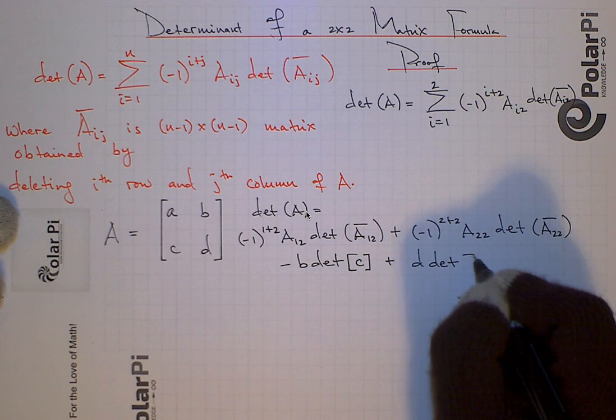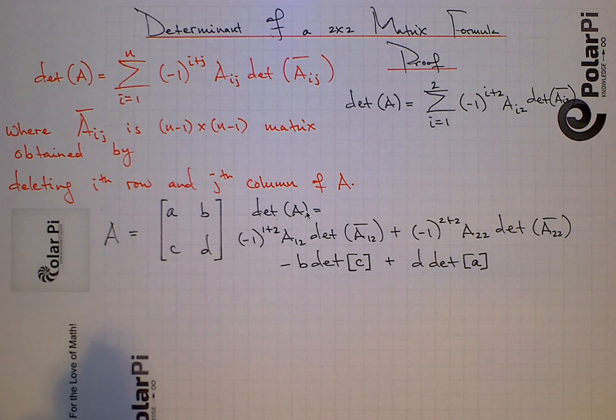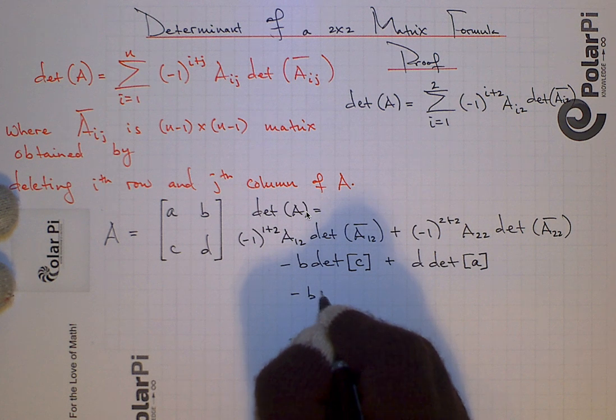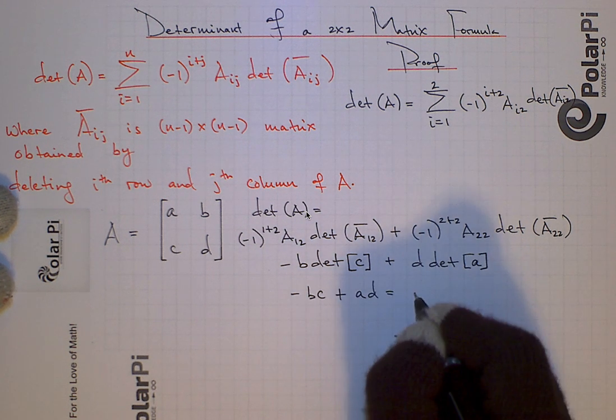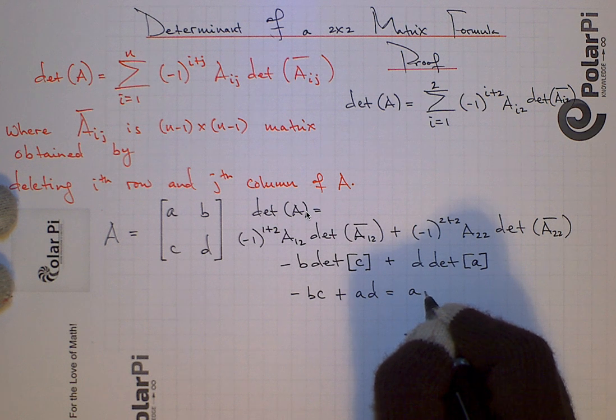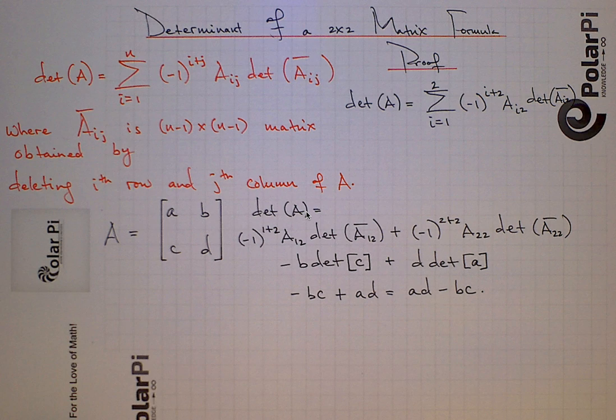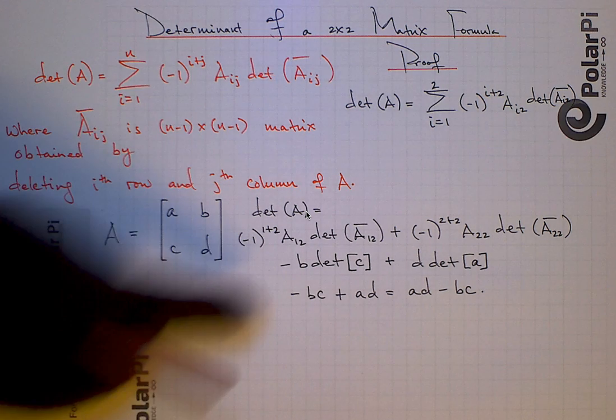So we've got determinant of A. And now, the determinant of a 1 by 1 matrix is just the value of that single entry. So here, we'll have negative B times C, and then we'll have plus A times D, which we can rewrite as it's got better ring to it as A, D minus B, C. And this is what I claimed was the determinant of this in my video on 2 by 2 determinants, and we just proved it.